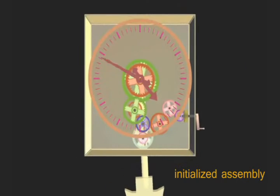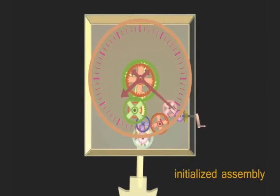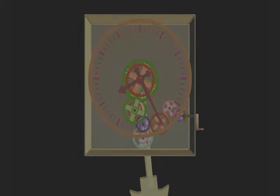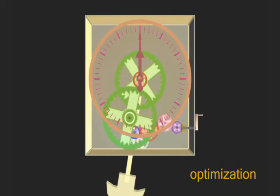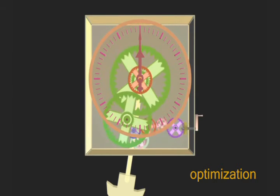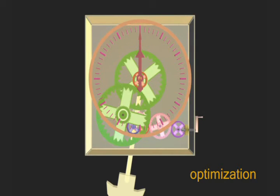However, the hour and minute hands are incorrectly synchronized in the rough initialization. Our algorithm automatically optimizes parameters for the entire chain to make the clock function properly. The computation takes just 10 seconds.